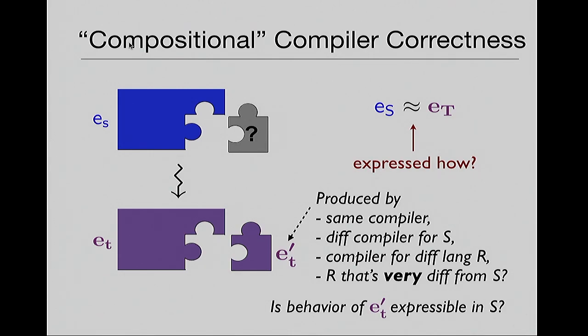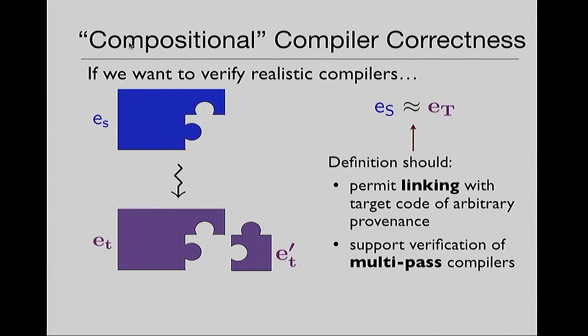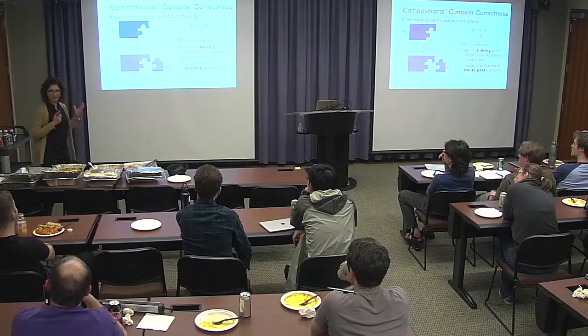Stepping back and asking what properties we need for compositional compiler correctness of realistic compilers: whatever equivalence you specify, you should permit linking with code of arbitrary provenance — not just code produced by my compiler. And you have to be able to support verification of multi-pass compilers, because that's how we write compilers. They are multi-pass, they're complicated. You can't possibly write a one-pass compiler for realistic languages. And these two things are tough to do together, which is the large point of this talk.